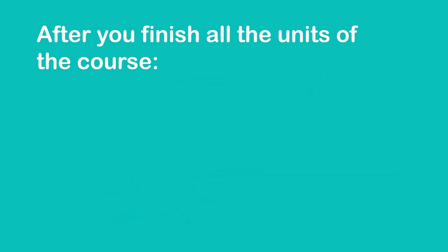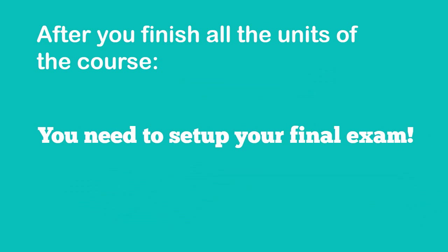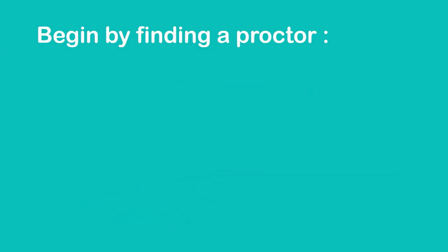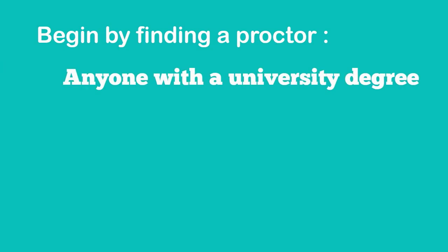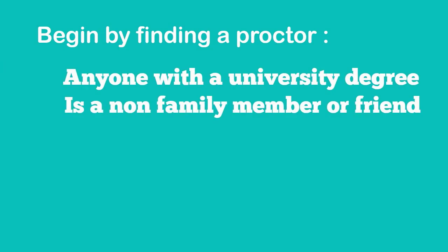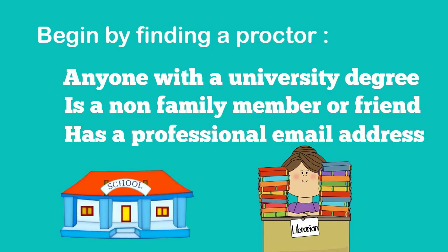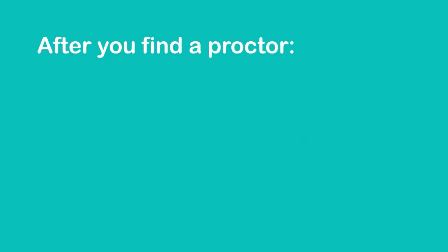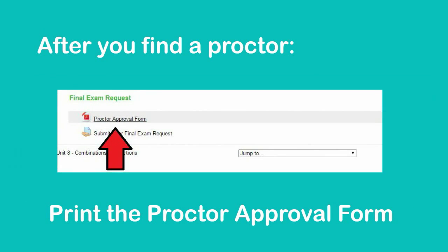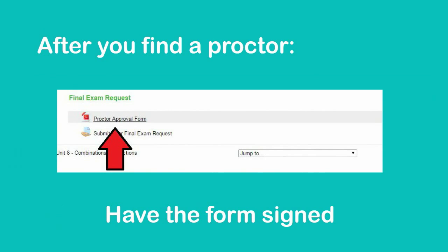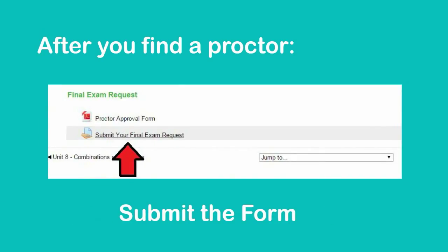After you finish all the units of your course, you need to set up your final exam. Begin by finding a proctor. Your proctor can be anyone with a university degree who is a non-family member or friend that has a professional email address. Most students set up their final exam at their current school or local library. After you find a proctor, you need to print the proctor approval form, have it signed, and submit the form for approval.